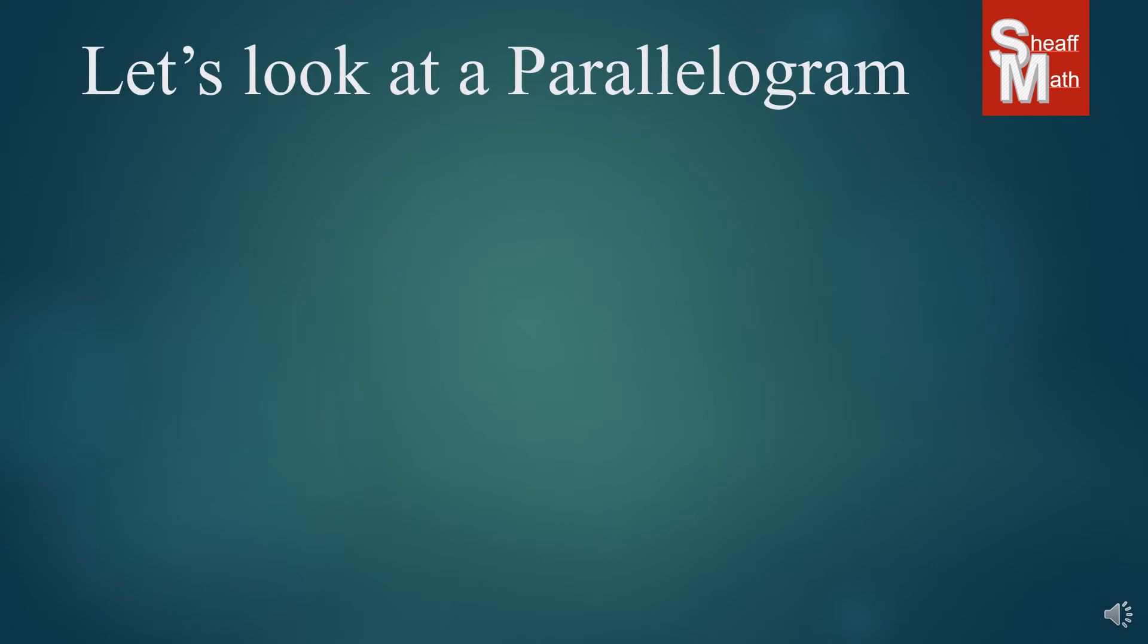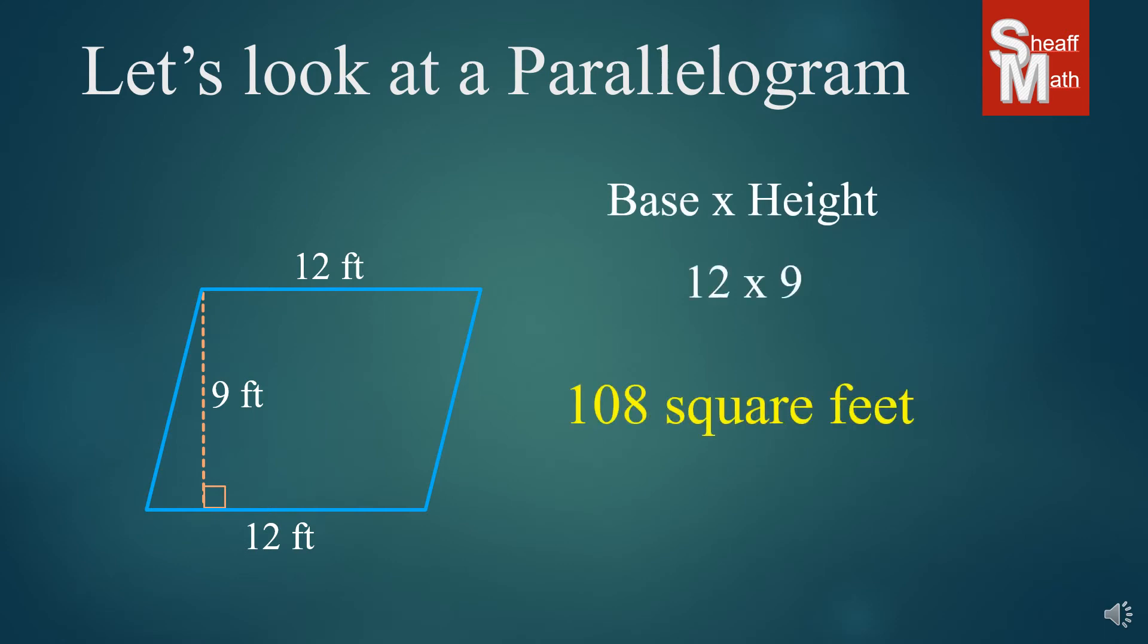Let's take a look at a parallelogram. Now, a rectangle actually is a parallelogram. It's a perfect parallelogram in that it has 90-degree angles, and we multiply the base times the height. Well, every parallelogram, you multiply the base times the height, but you have to make sure that you have the right height. It's that perpendicular line that goes from the peak to the base, and so that happens to be 9. It's not the left and the right sides at all. So all we have to do is multiply the base times height, 12 times 9, and we get our answer, 108 square feet.